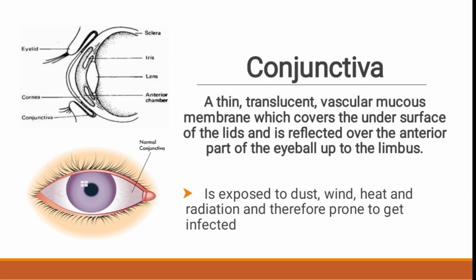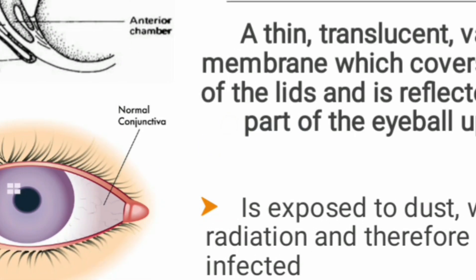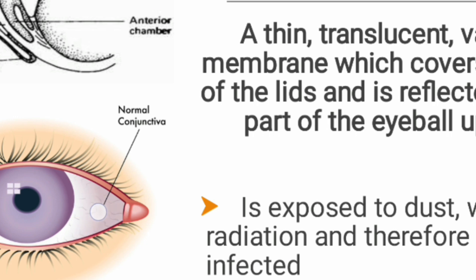The conjunctiva is a transparent layer which covers the sclera — this white region — up to the limbus. The limbus is the junction between the cornea and the sclera. The conjunctiva covers this whitish part, which is the sclera, comes up to the limbus, and also covers the underlying eyelid surface.